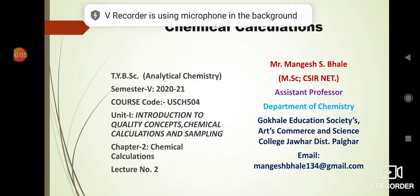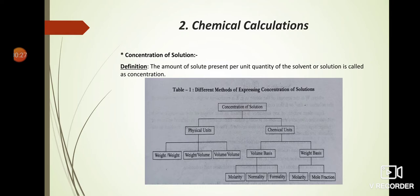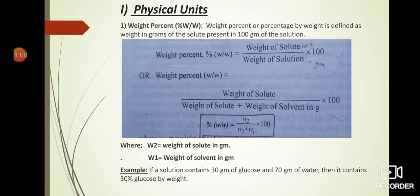Welcome back dear students to the second lecture of chemical calculations, coming under unit number one: introduction to quality concepts, chemical calculations, and sampling. In the previous lecture we have seen the definition of chemical calculations, then different methods of expressing concentration of solutions. There are two major methods: physical methods and chemical methods. In physical methods we have seen weight by weight, weight by volume, and volume by volume. In chemical units we have seen molality and formality.